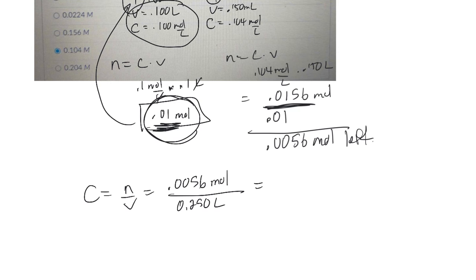Okay, so let's figure out what that is. 0.0056 divided by 0.25. So you get 0.0224 moles per liter.